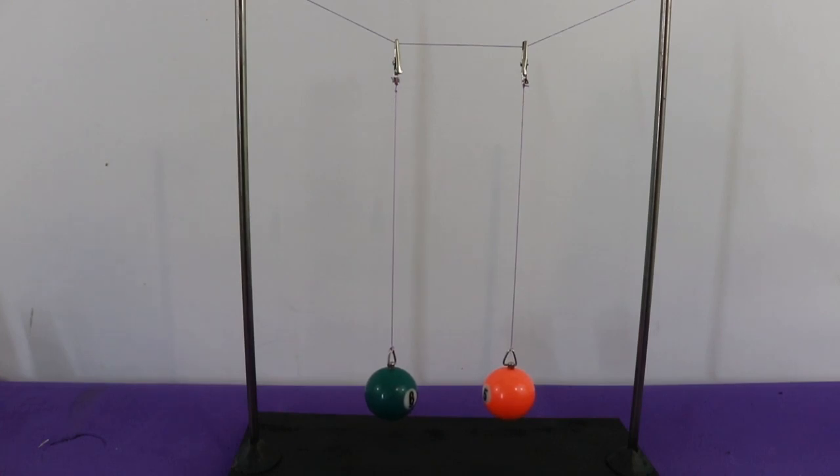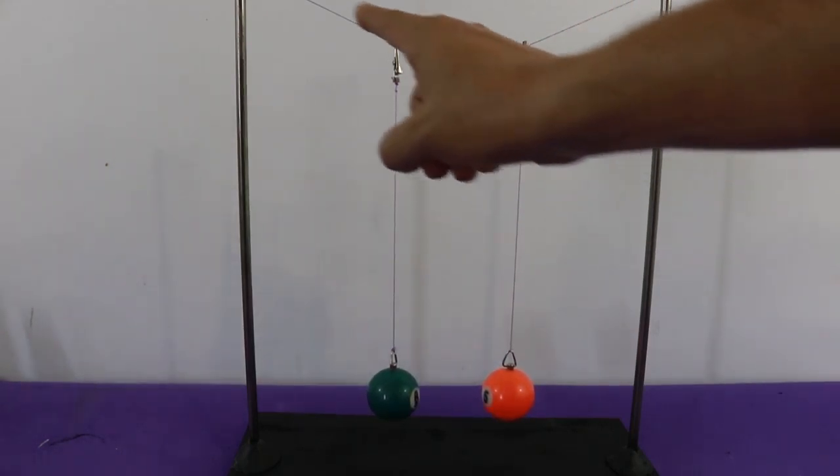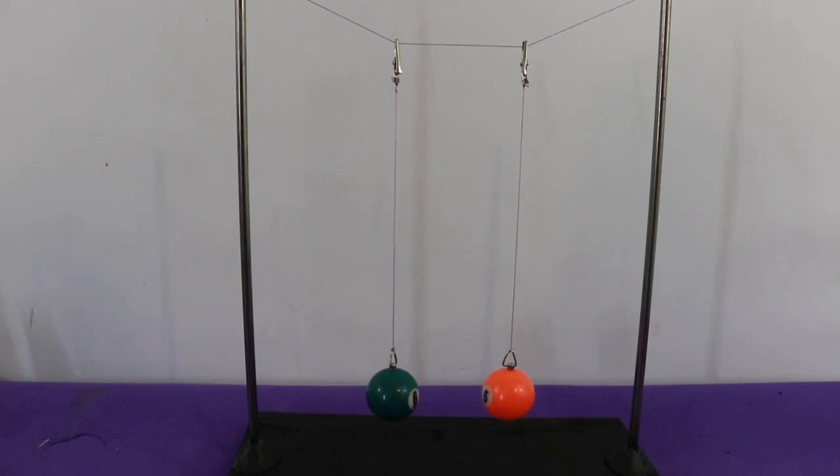As you can see we have two pendulums here and we say that they are coupled because both hang from the same thread. In this way the movement of one pendulum affects the movement of the other and vice versa.